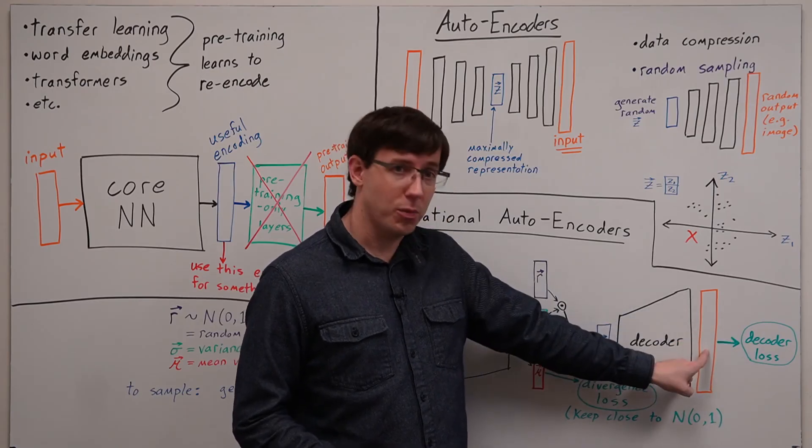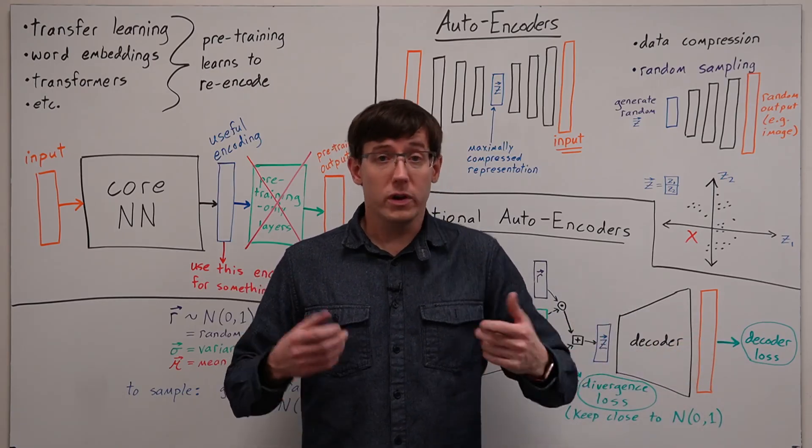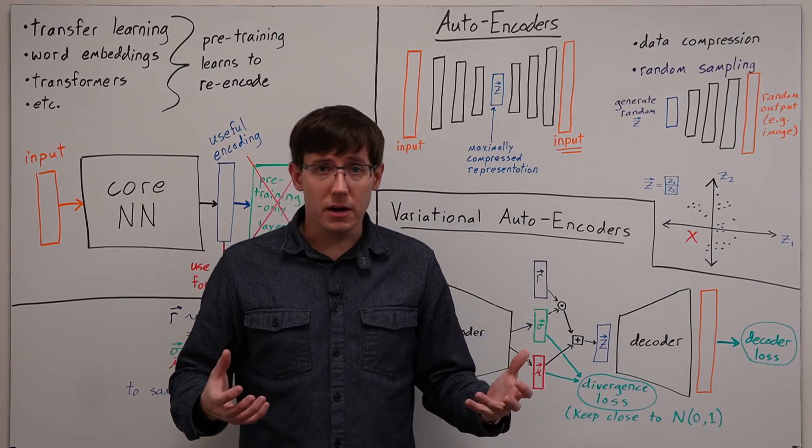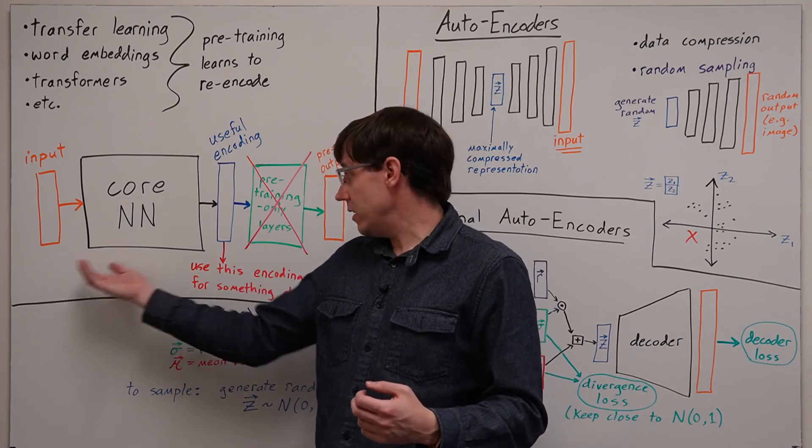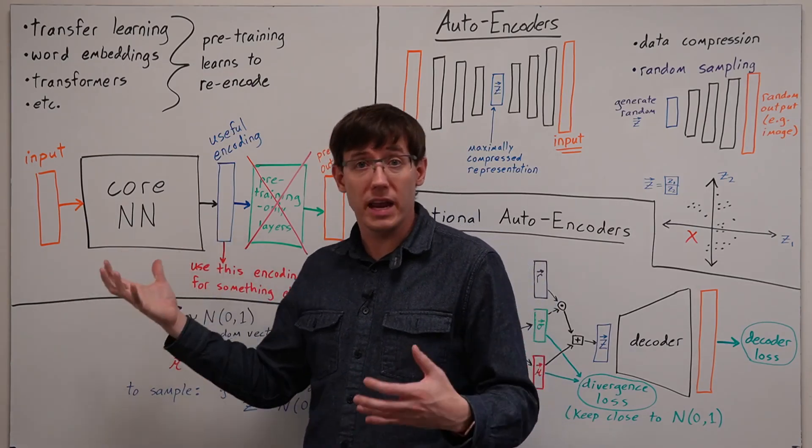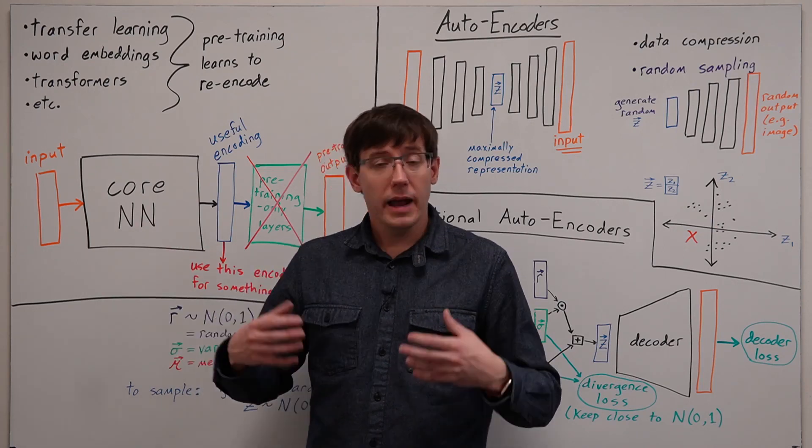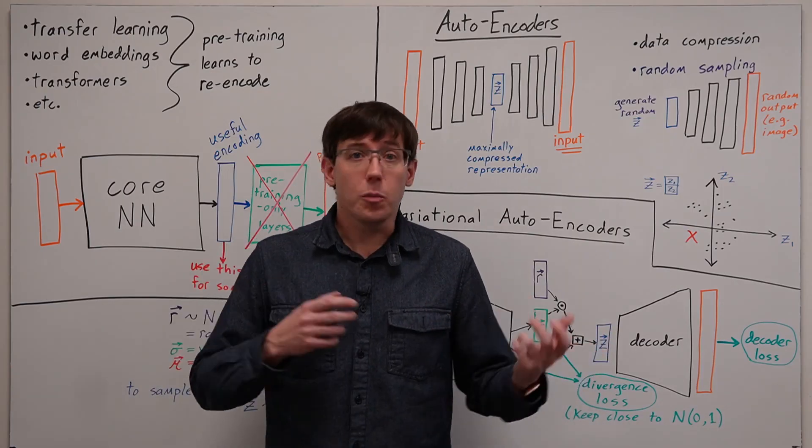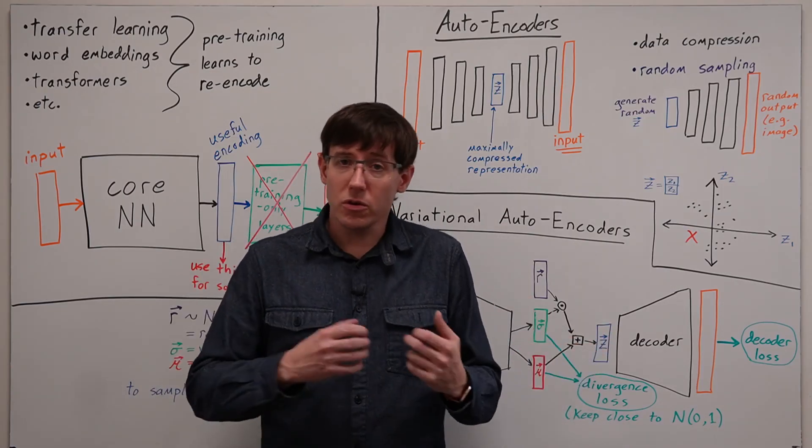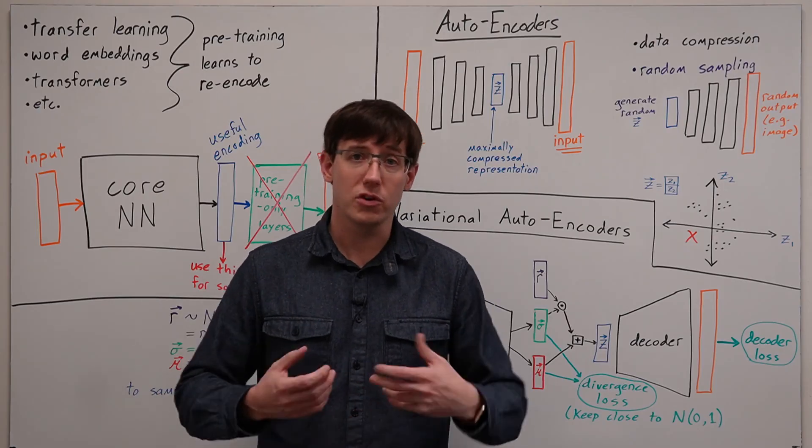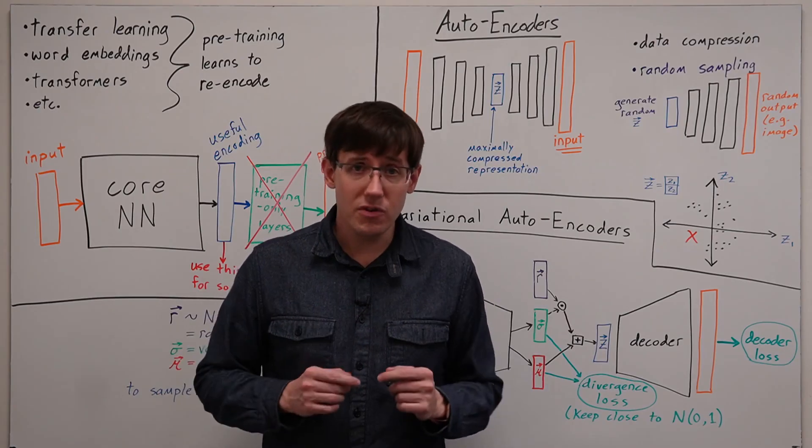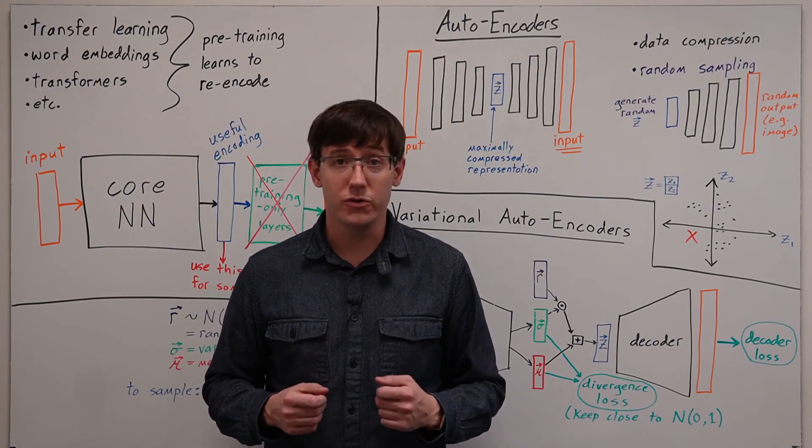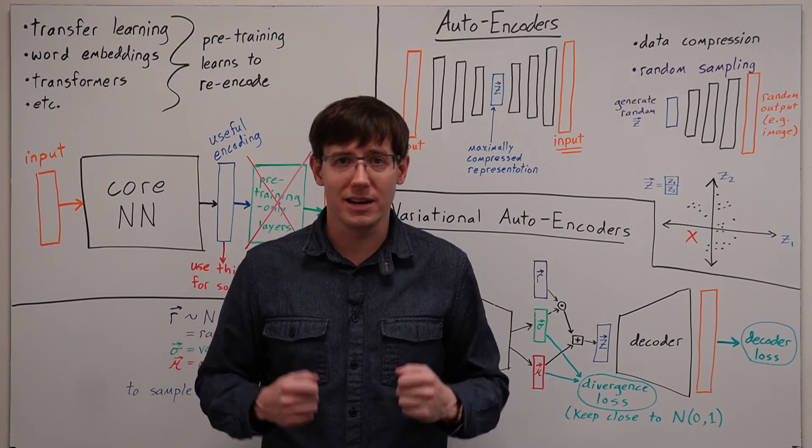So what all this does is takes the idea of using a neural network's hidden layer as a data encoding and turns that into an encoding that we can sample from. Which means it's possible to use a neural network to learn a probability distribution over a data set, and this gives us the starting point for generative adversarial networks that we can use to generate all kinds of interesting data.